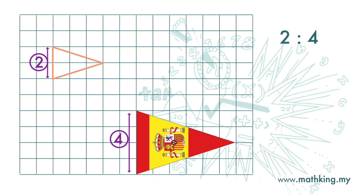What we need to do is to make the 2 become 1. We can do that by dividing it by 2. Then we also need to divide the 4 by 2, and we get the scale 1 to 2.